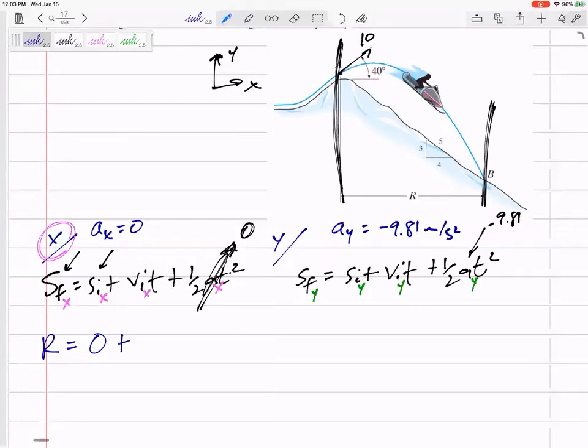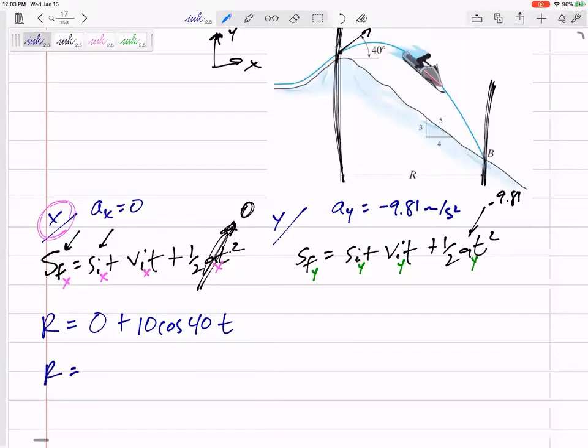Equals zero. So the initial velocity, remember, we're only looking in the x direction, so that would be 10 cosine 40, and then zero. I like to do as much of the math as I can, 7.66t, but then I get to a point most of the time where I've got two unknowns, just one equation.